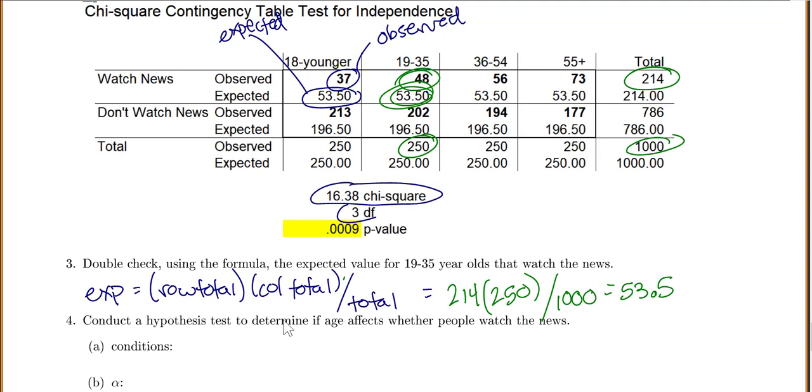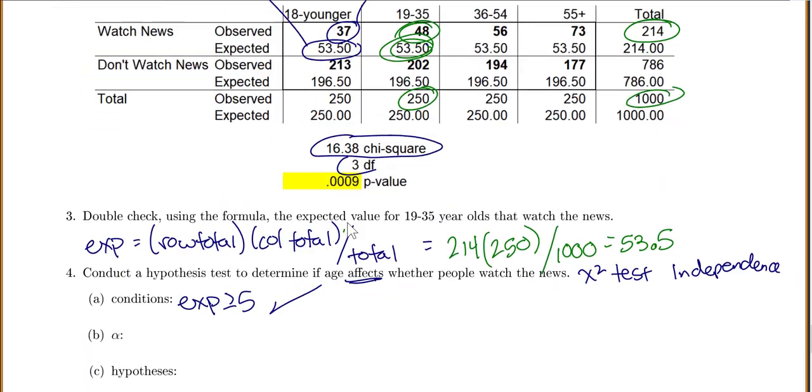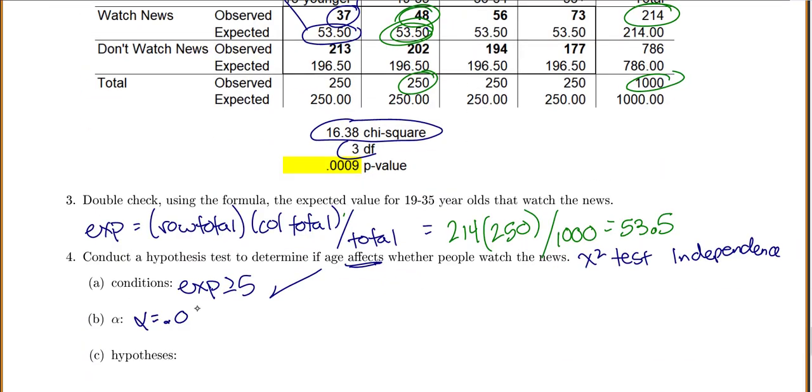So let's conduct a hypothesis test to determine if age affects why people watch the news. Because we want to see if something affects something, we're doing our chi-squared test of independence. First you have to check your conditions, which is that all expected values are at least 5. Well, it looks like 53 is our smallest one, so we're definitely good there. It doesn't tell me an alpha, so I'll just choose alpha equals 0.05.